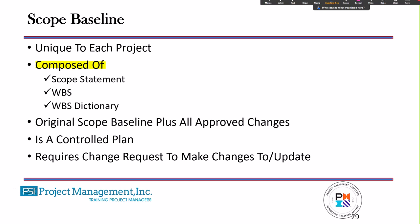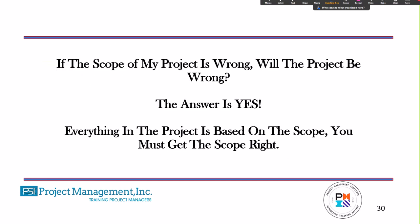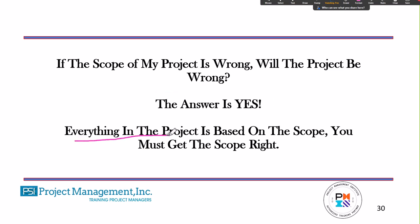So let's look at the original question: if the scope of my project is wrong, will the project be wrong? The answer is yes, most definitely. If you do not do enough scope development or you get it wrong, then the project will be wrong — everything in the project is based on the scope. So when you're doing the scope of the project, you've got to get it right.